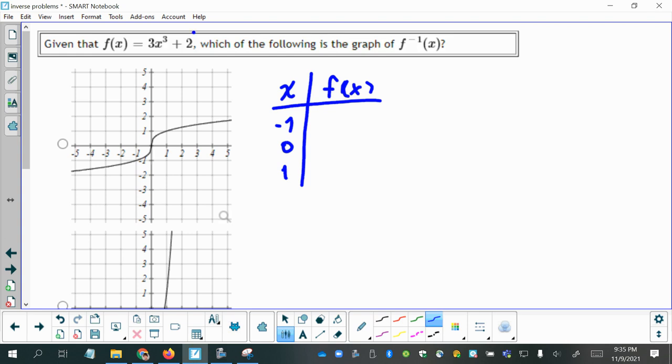And then using the given function, I'm going to plug in each x value. So 3 times negative 1 cubed plus 2. That will give me negative 3 plus 2, which is negative 1. So now I've got one ordered pair for my original function, negative 1 comma negative 1.